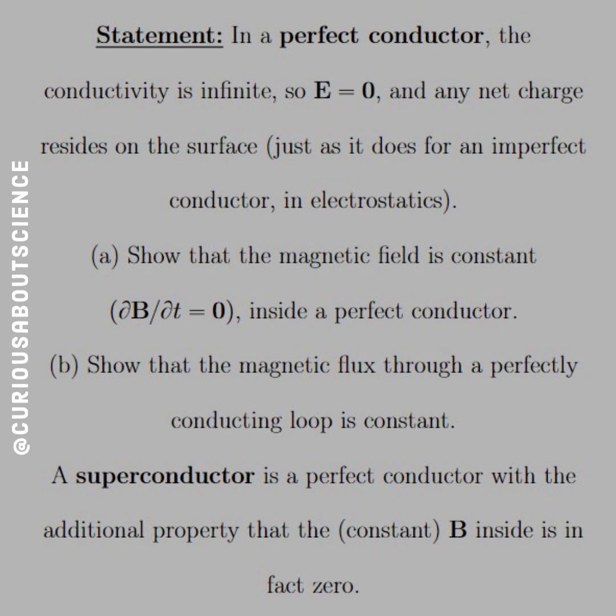Part A: Show that the magnetic field is constant, or ∂B/∂t equals zero, inside a perfect conductor. Part B: Show that the magnetic flux through a perfectly conducting loop is constant.